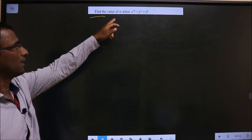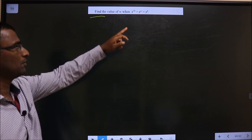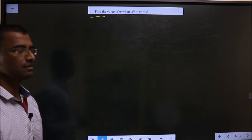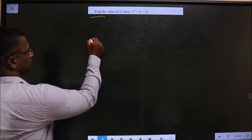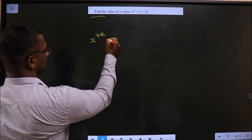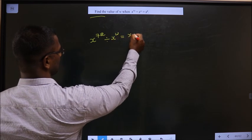Find the value of W when x^72 divided by x^W equals x^8. Given equation is x^72 divided by x^W equals x^8.